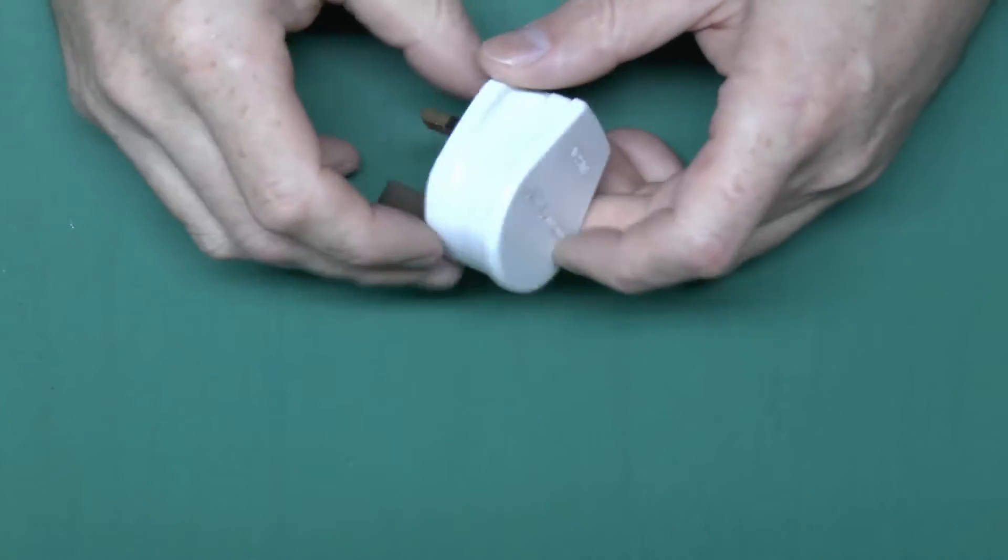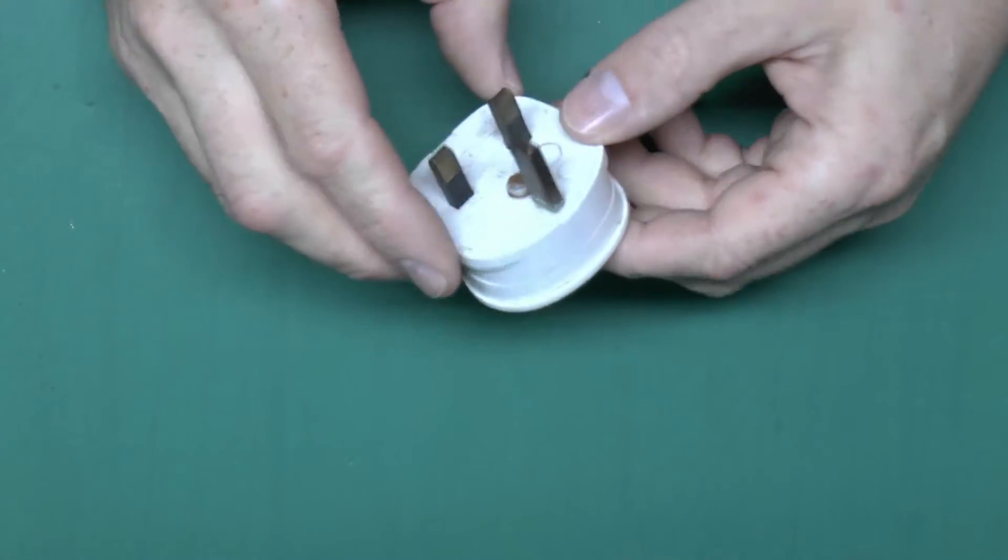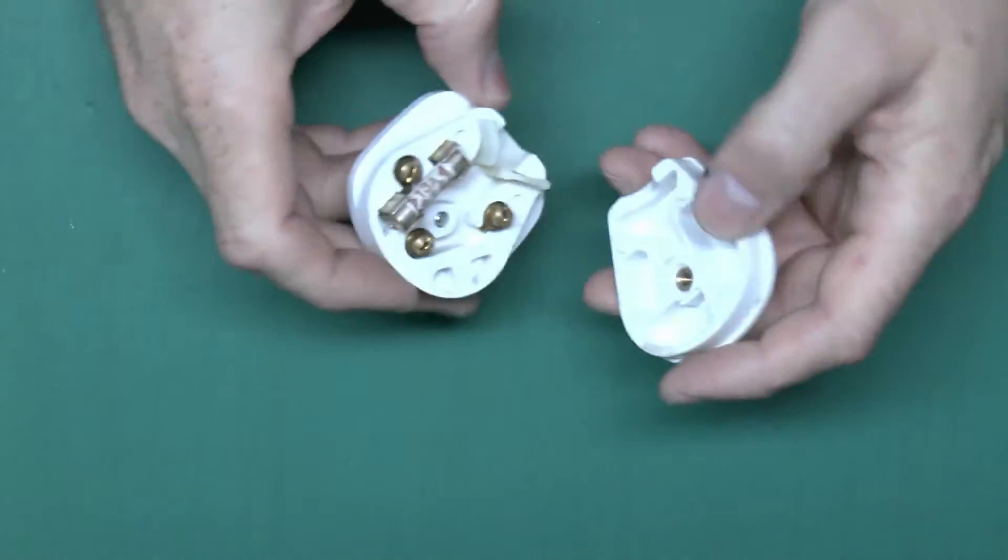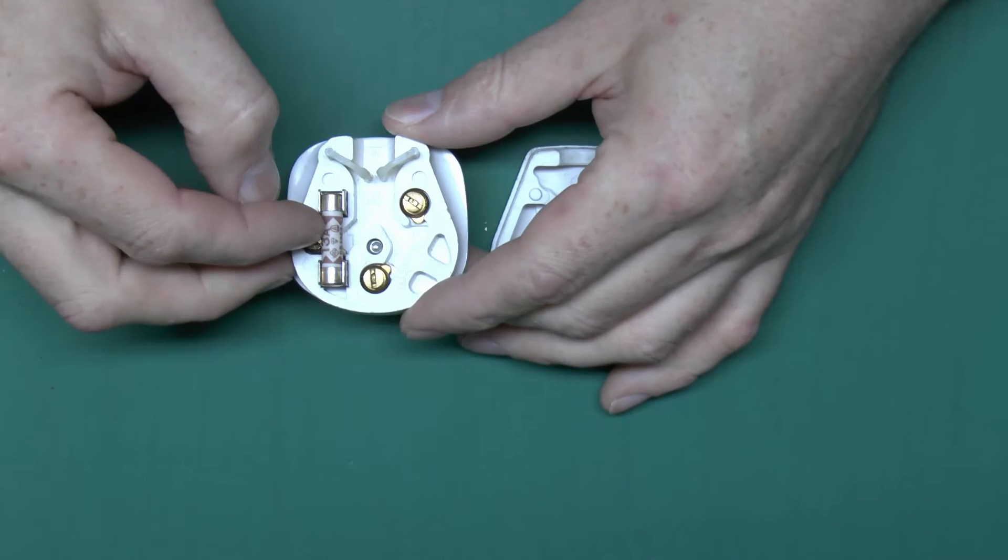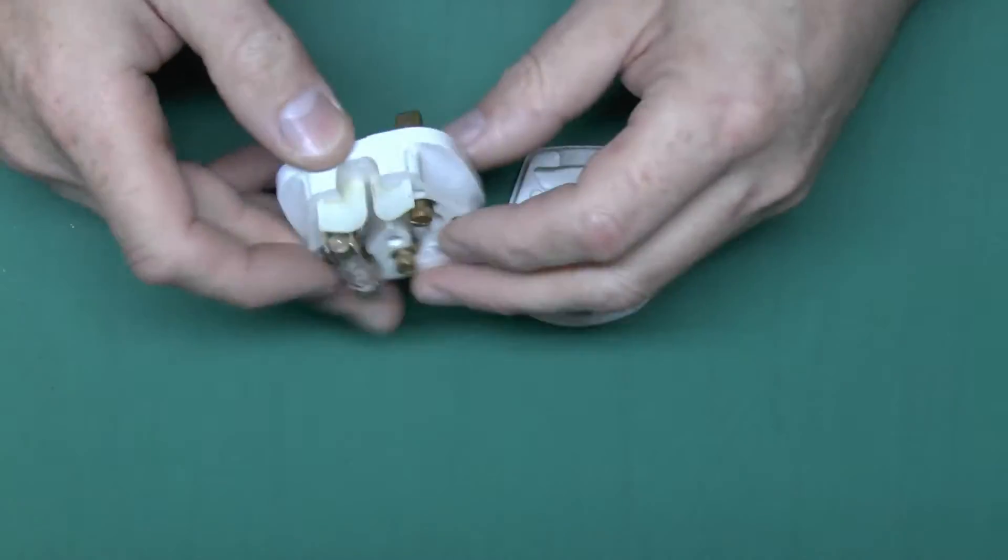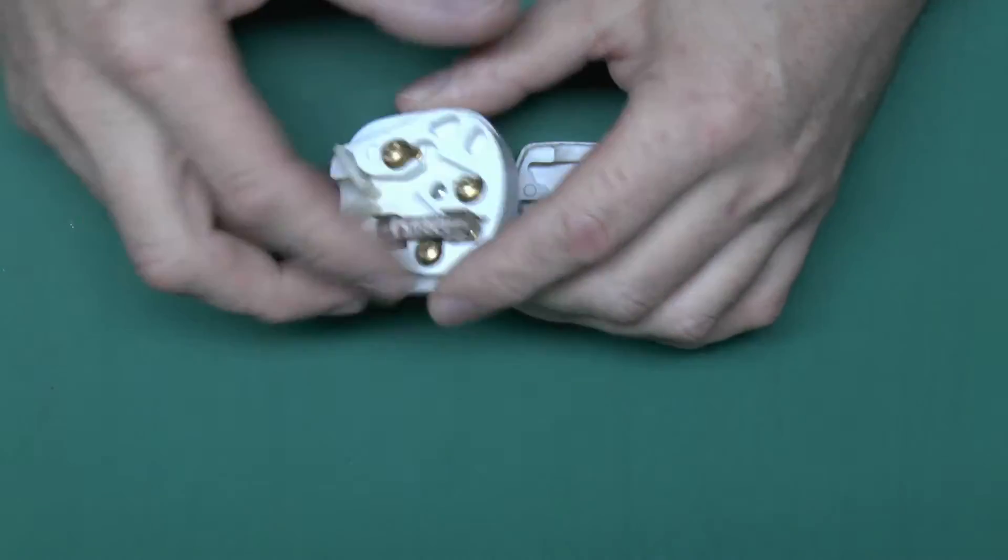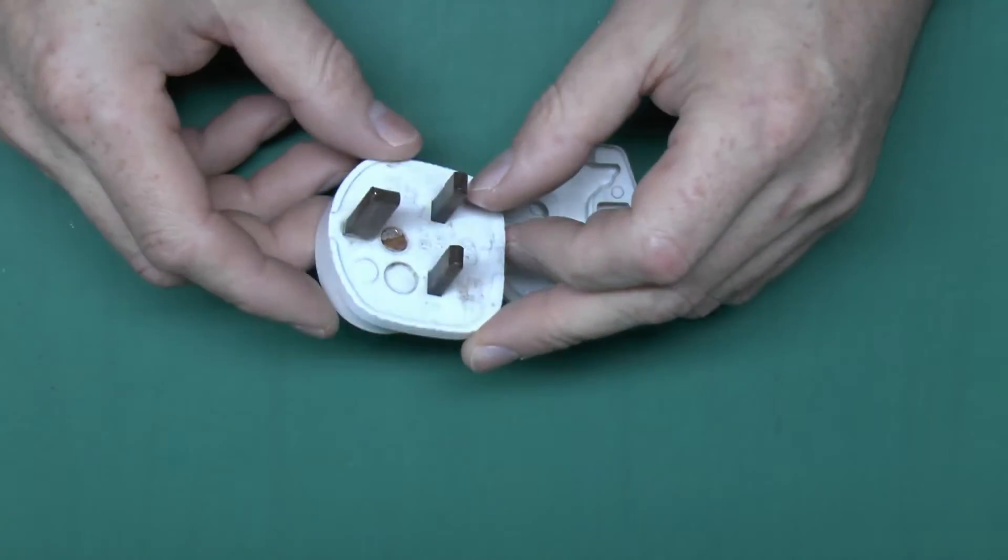Now, as I said, this particular style of plug is the one that's currently in use in the UK. So this is a fairly older example with a bit of rust and corrosion there. But essentially it's the same sort of design. And the key function of these things is that inside there is a fuse, a 13 amp fuse in this case. And that's there primarily because the flex from the plug to the appliance can be fairly thin.